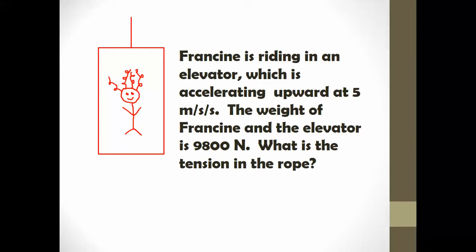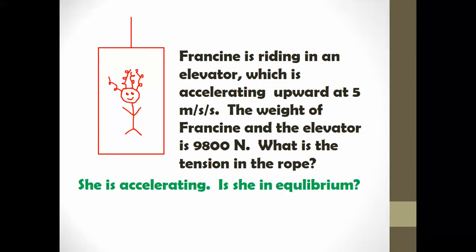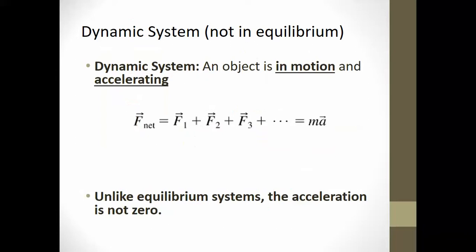To solve this problem, we want to think about the fact that she's accelerating. Since she's accelerating, she is not in equilibrium. An equilibrium system is one where there's no acceleration, so this is going to be a different type of problem. This is an example of a dynamic system — any system that is not in equilibrium.